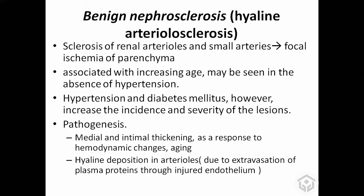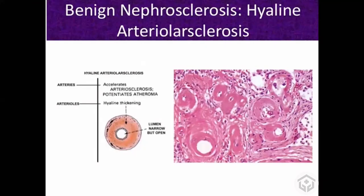Due to the pressure, they develop hyperplasia and hypertrophy, and also hyaline deposition in the vascular media, because some protein leaks into the media. That's why it is also known as hyaline arteriosclerosis. It's a normal phenomenon with aging, although hypertension can increase the incidence. When there is hypertrophy of the media and intima, the lumen gets narrowed and blood supply may be reduced.